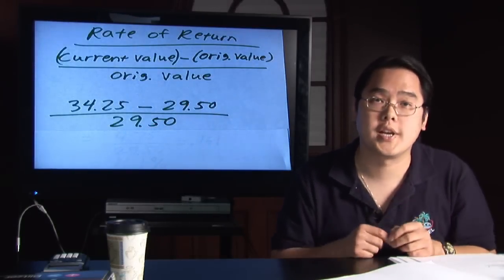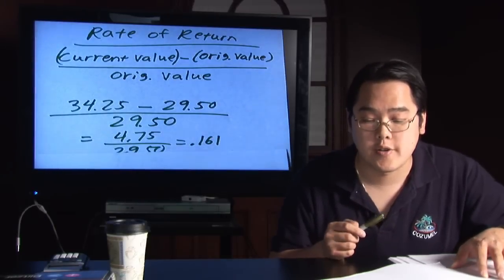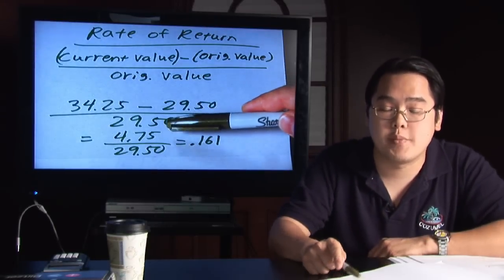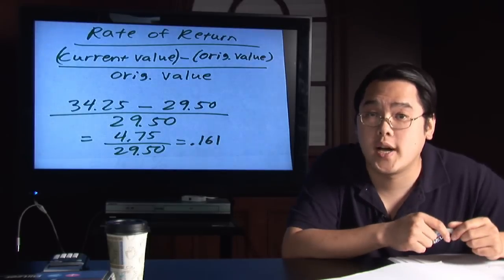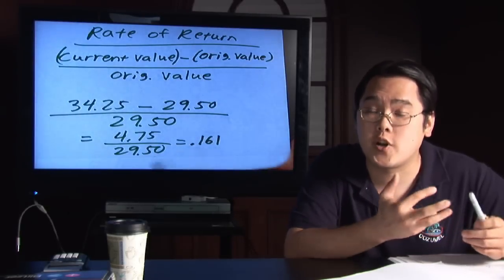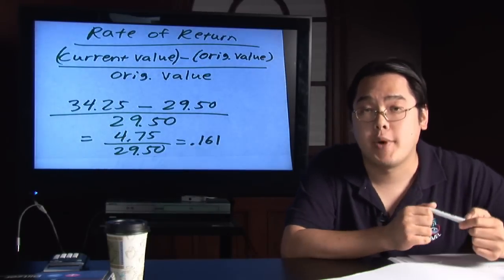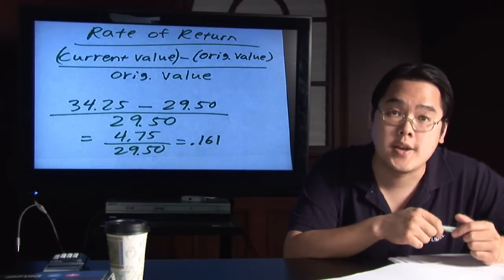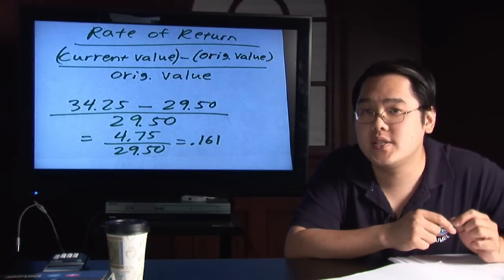Now, using a calculator to do this is going to be a little more straightforward. When you do the subtraction, you're going to find out that the numerator is $4.75. In this case, you gained $4.75, but to figure out how much of a percentage gain this is, you divide by $29.50. Rounding to three decimal places, you're going to get 0.161.